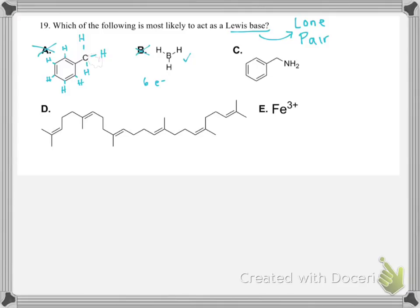Coming over here, we look at this nitrogen-containing compound. If we get rid of those implicit hydrogens and draw them in explicitly — hydrogen, hydrogen — our nitrogen, as drawn, only has six electrons around it. We know it needs to have a full octet, so go ahead and put a lone pair on that.